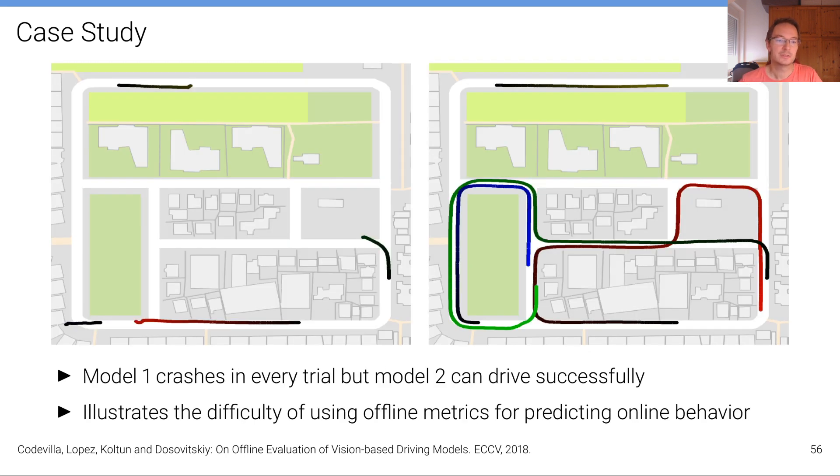So here's another figure from the paper that illustrates this case study where we can see that model one crashes in every trial, but model two can drive successfully. And this illustrates the difficulty of using offline metrics for predicting online behavior.